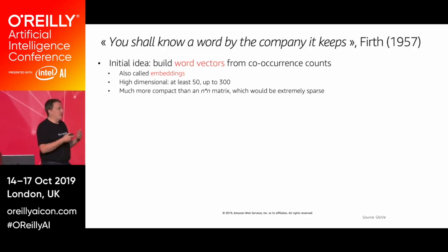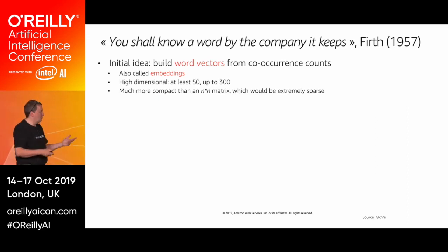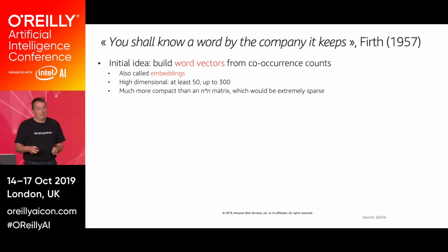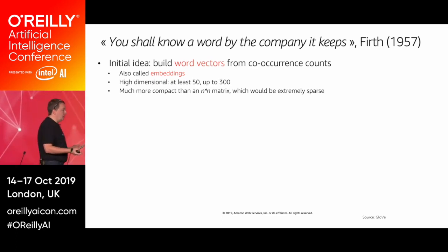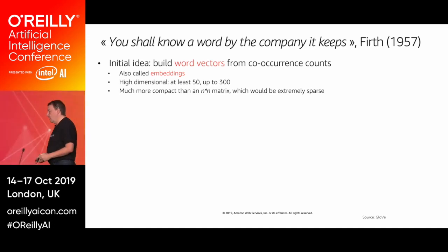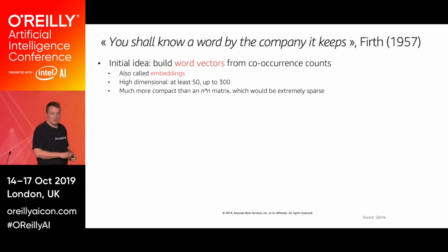The initial idea was co-occurrence counts: take a huge corpus, build a big matrix showing how many times in a certain window a pair of words appears. The problem is that this is huge — if you have a million words, you don't want to handle a million-by-million matrix. So we need something denser: word vectors, also called embeddings — because machine learning uses very complex words for pretty simple things. They'll have a couple hundred dimensions, typically 50 to 300.